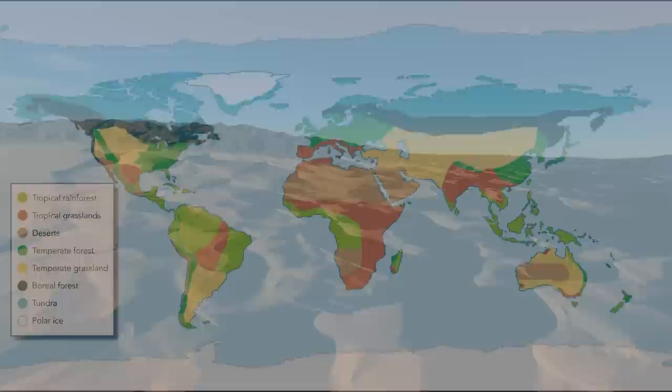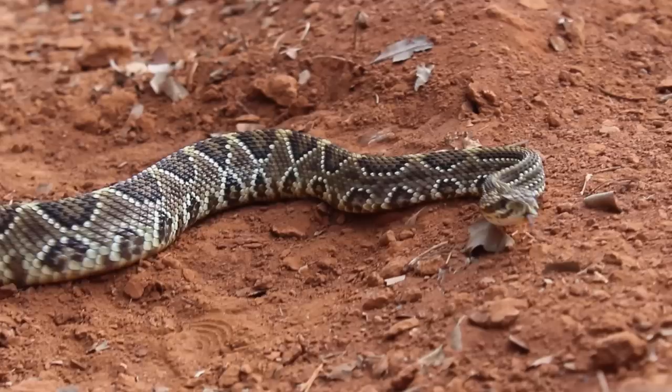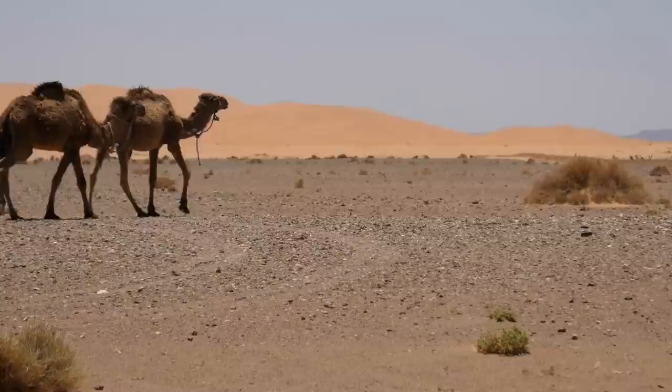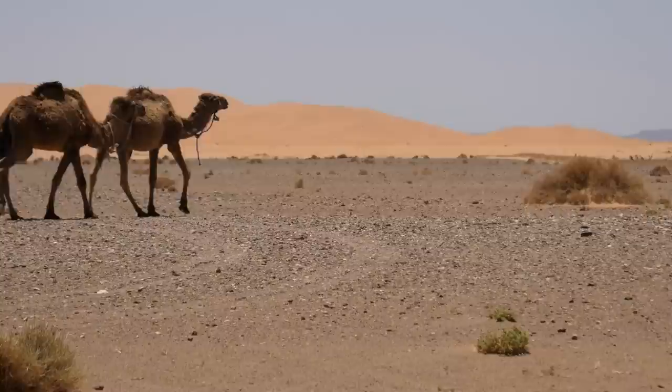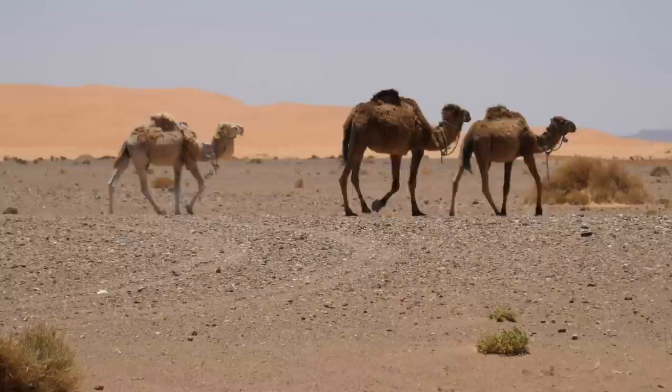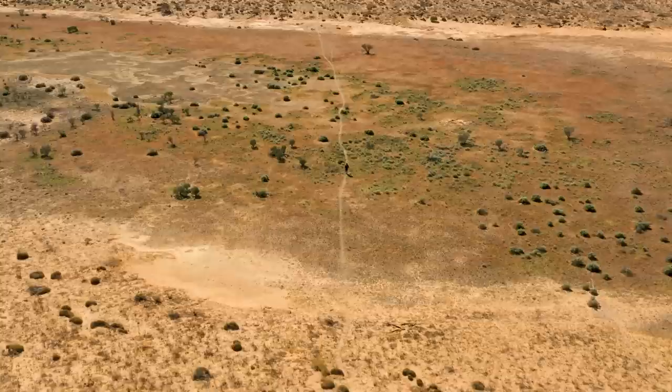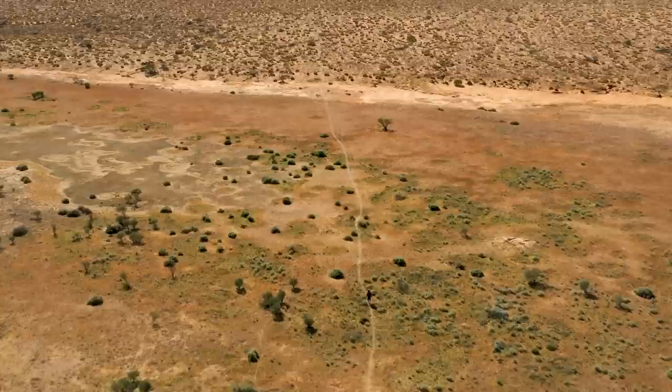Deserts are dry, often extremely hot, and have very little vegetation. The harsh conditions and extremes in temperature mean that desert plants and animals have highly specialised adaptations for survival. Common deserts include the Sahara Desert in northern Africa, the Mojave Desert in southwestern United States, and the red sandy plains that make up Australia's Simpson Desert.